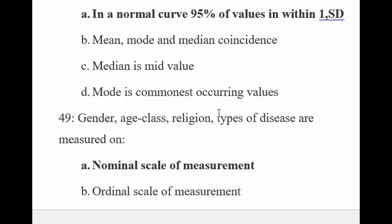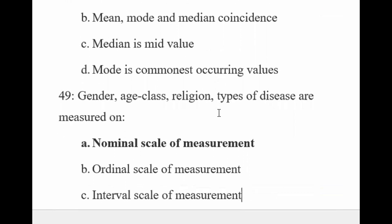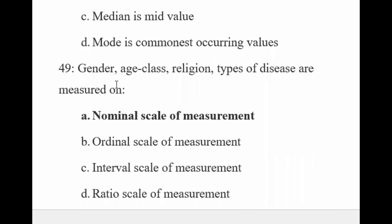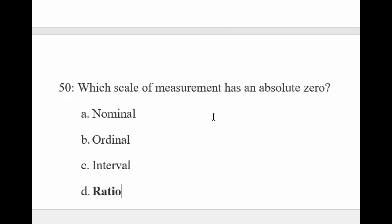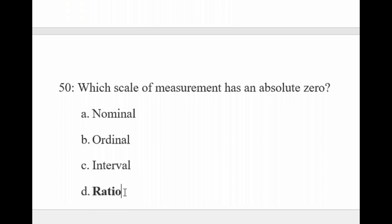Gender, age class, religion, and type of disease are measured on nominal scale measurement. These variables fall under nominal scale measurement. Regarding which scale of measurement has an absolute zero: nominal and ordinal are qualitative; interval and ratio are quantitative. Zero has meaning in ratio scale. In ratio scale zero is true zero, while in interval scale zero is considered arbitrary — so true zero belongs to ratio scale.